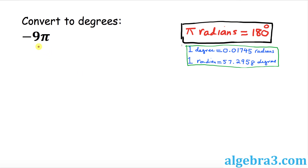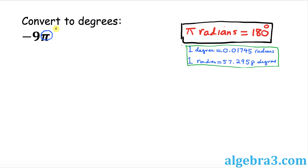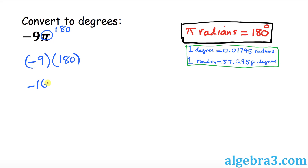How about this example: we want to convert negative 9π radians to degrees. Once again, wherever you see pi, you replace it by 180. So this simply becomes negative 9 times 180, and that gives you negative 1620 degrees. That is our answer.